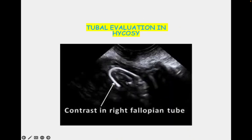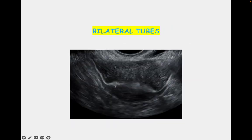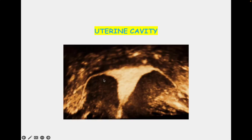This image shows tubal evaluation in HyCoSi, with contrast visible in the right fallopian tube. In another image, bilateral cornua and the fallopian tubes can be seen, as well as a well-delineated uterine cavity.